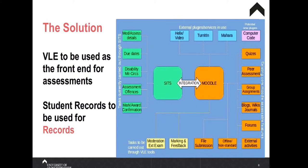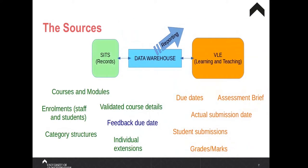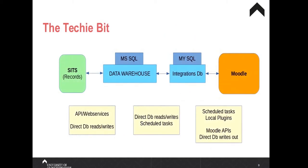The first step was to recognize the bits we already had and where the data sources were coming from. Courses, modules, and enrollments were coming from student records already, as were validated course details. Whereas the assignment brief, due dates, quizzes, and the date students actually submitted — the core data for those — would eventually come from Moodle, because that's where the student was submitting to. The asterisks mark what we were already passing to Moodle to create courses, modules, and put staff and students on them. Validated course details had a different color star because that was in development.